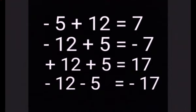Look at the example. First: minus 5 plus 12. Both signs are different, so we subtract the smaller digit from the greater digit. So, 12 minus 5, the answer is 7. The answer is plus 7 because 12 is greater and 12 has a plus sign, so in the answer we write plus 7.